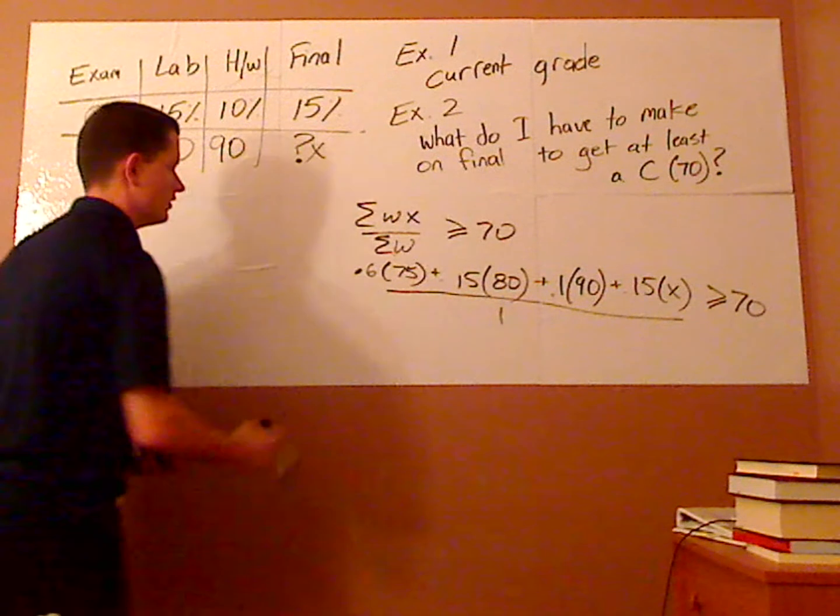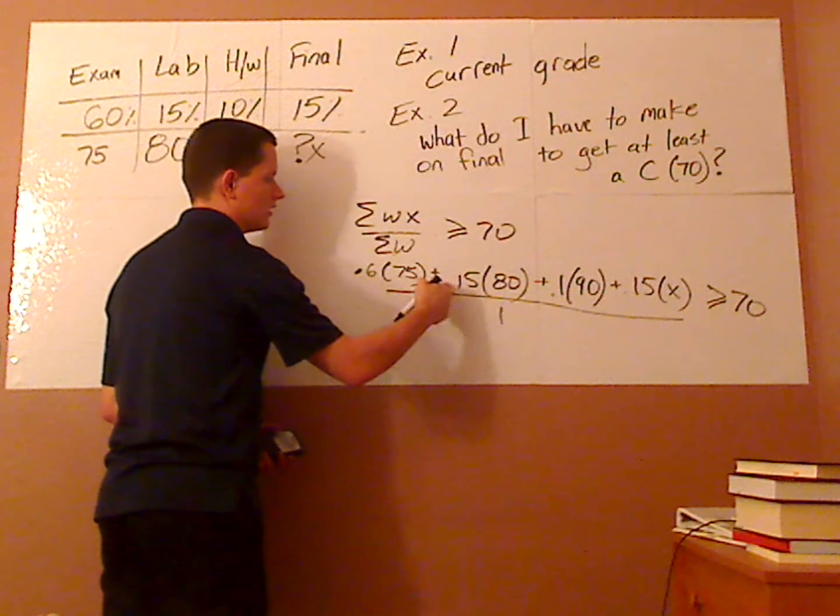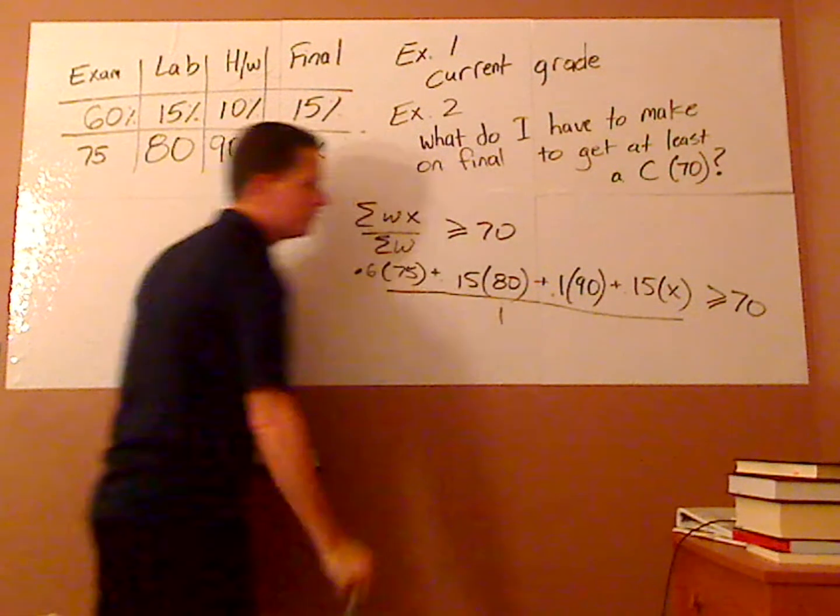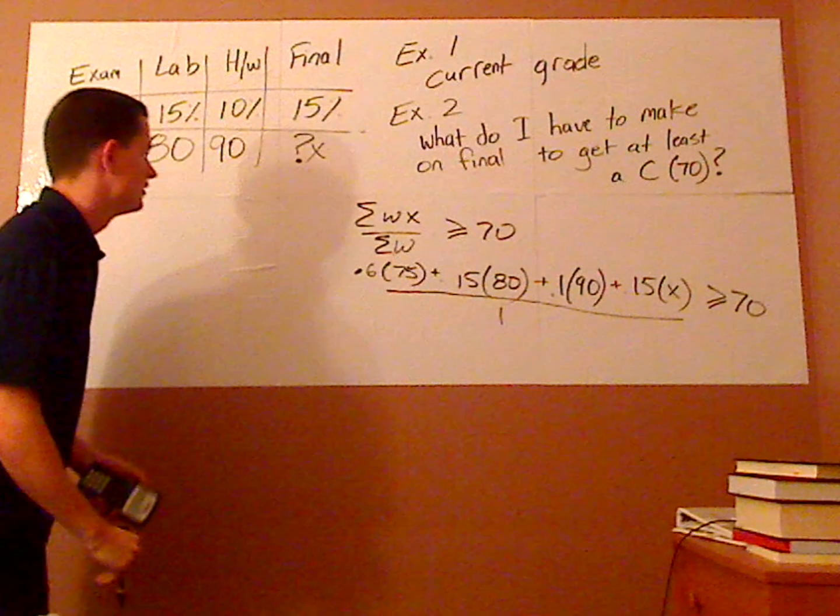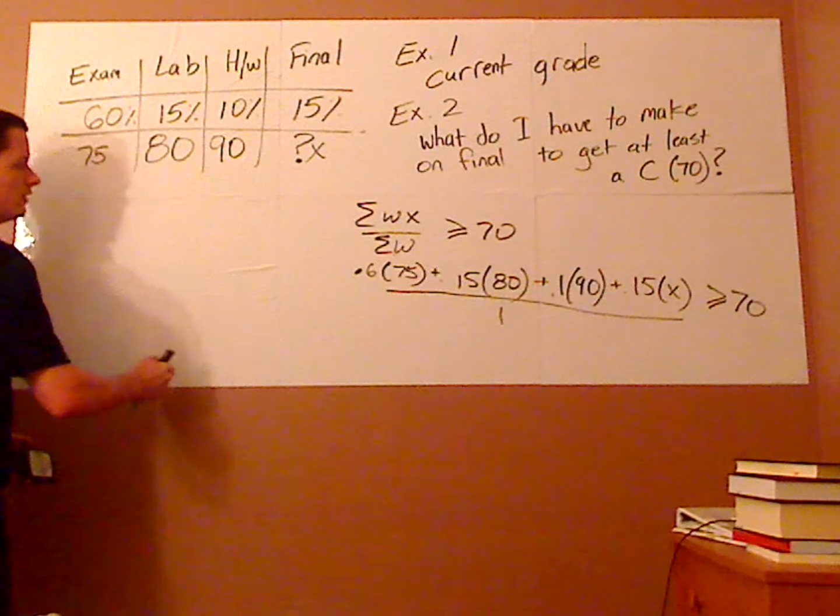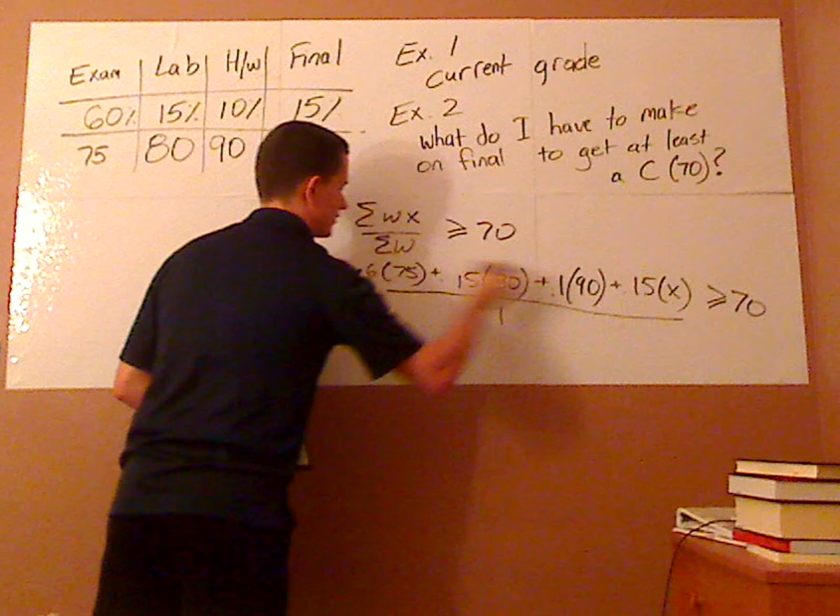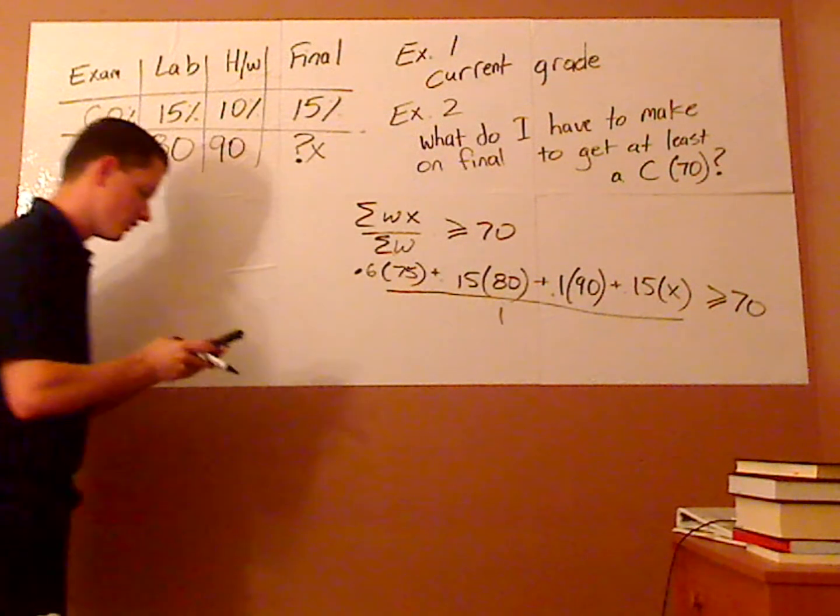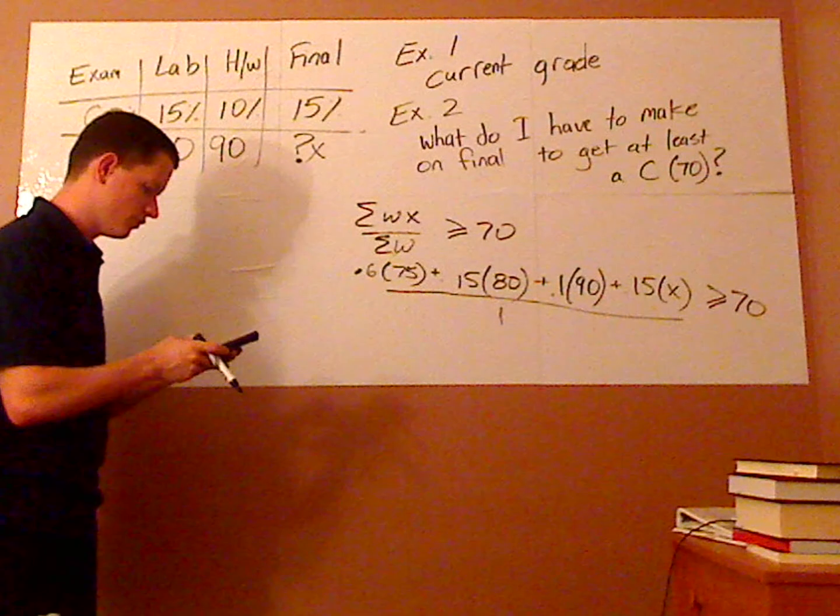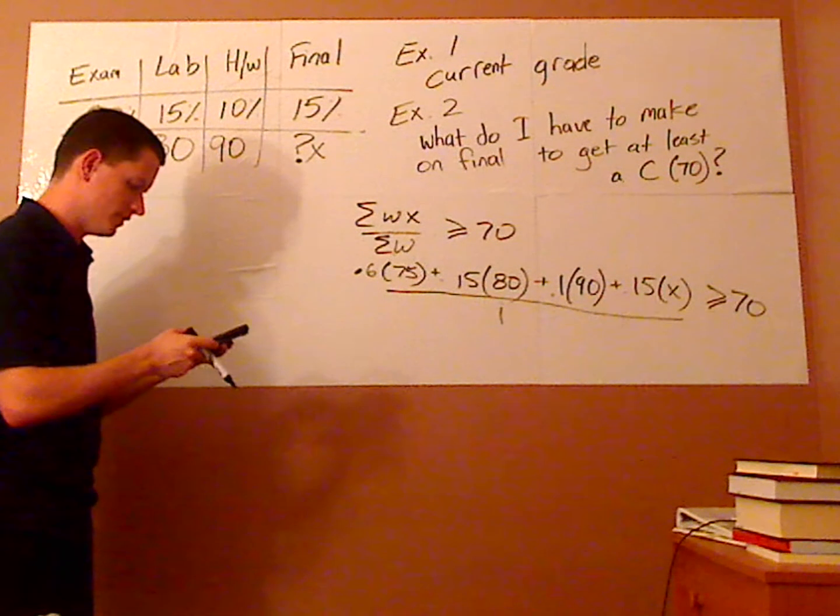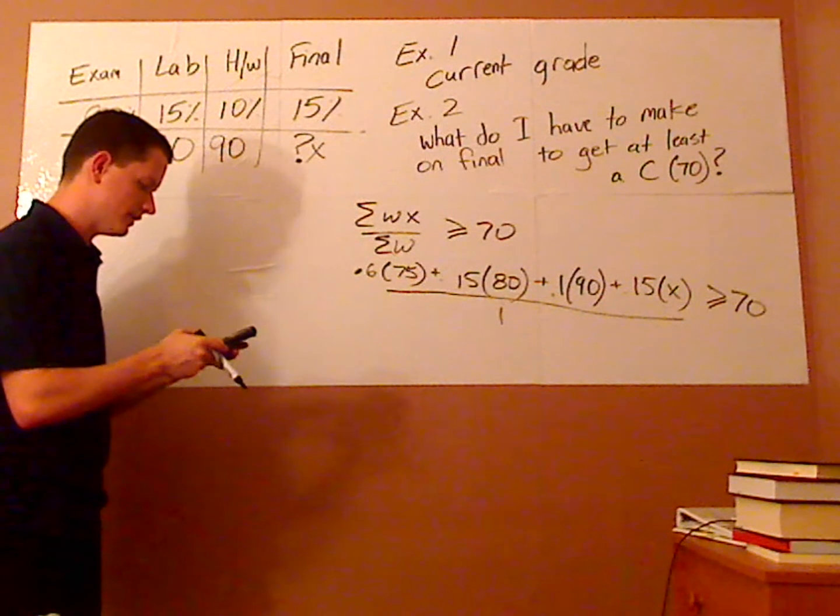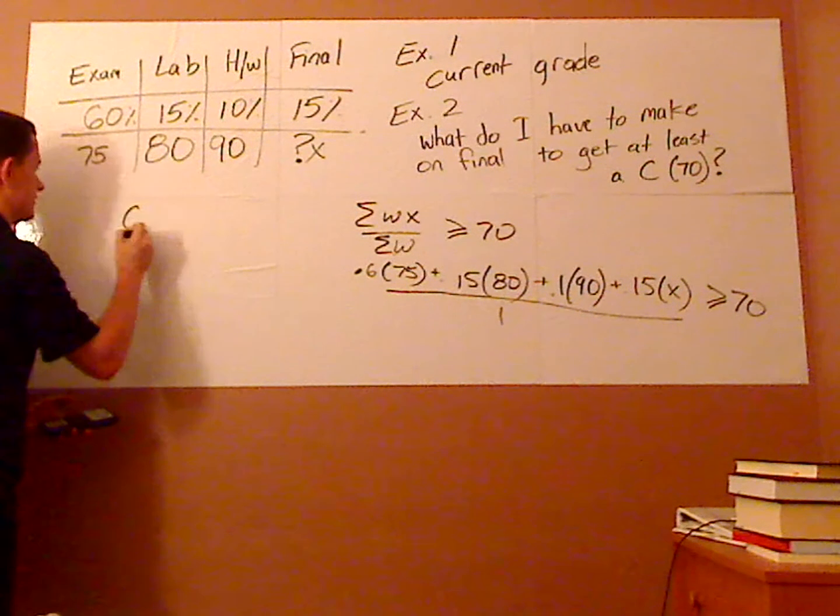Alright, so if I add 0.6 plus 0.15 plus 0.1 plus 0.15, that's going to give me 1. So, it's divided by 1, so I don't really have to divide it, but what I want to do is I want to calculate this. So, I'm going to plug all of that into my calculator. So, it's 0.6 times 75 plus 0.15 times 80 plus 0.1 times 90 gives me a 66. So, it's 66 plus 0.15 X greater than or equal to 70.